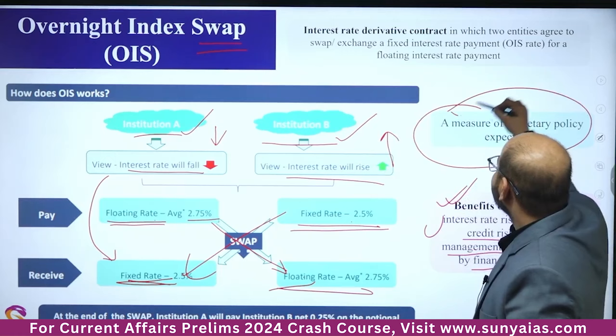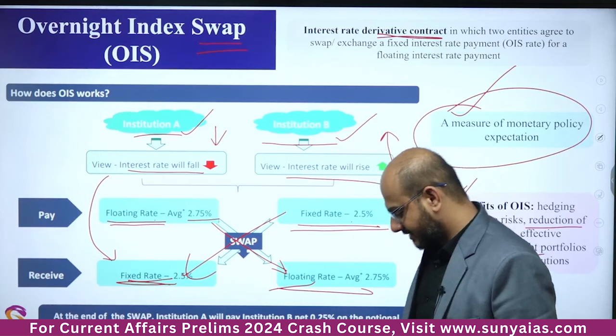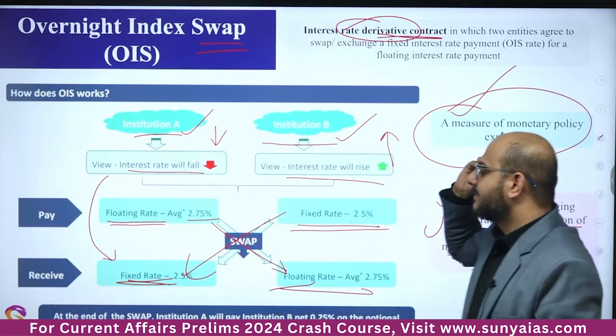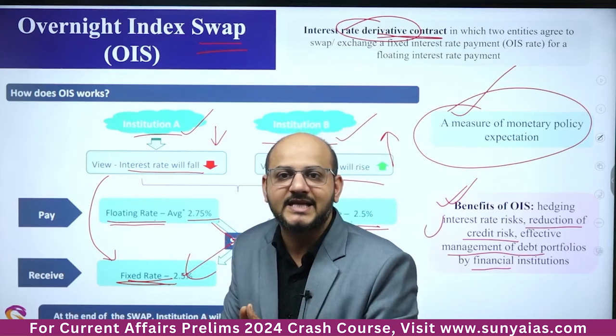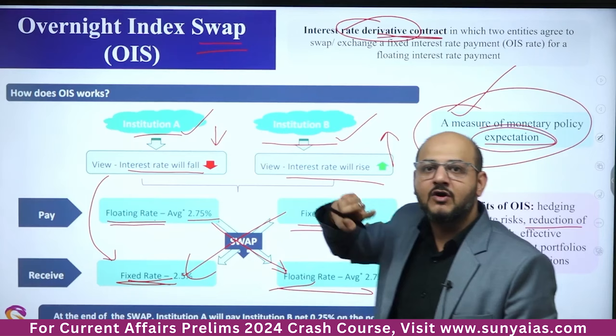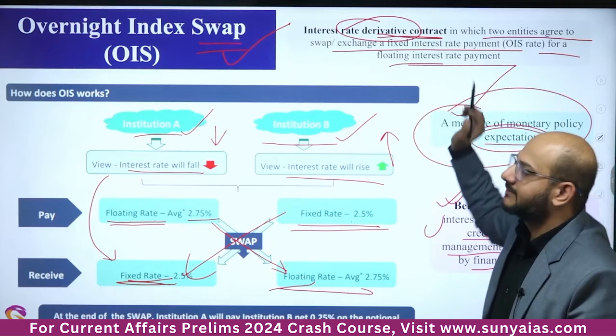It is a measure of monetary policy expectations — whether interest rates in an economy are going to increase or decrease. It functions as an interest rate derivative contract. Based on the direction of interest rates, this swap happens. It provides an indicator or forecast of where the economy is moving. In essence, two entities agree to swap a fixed interest rate for a floating interest rate payment.